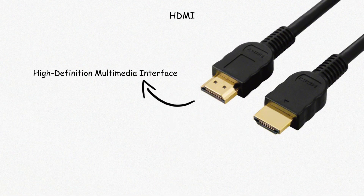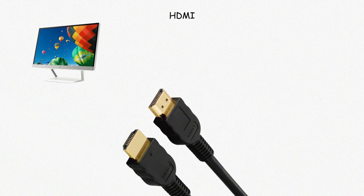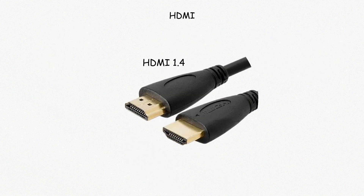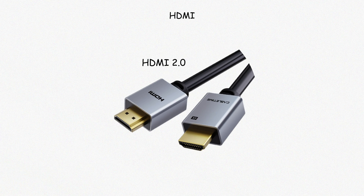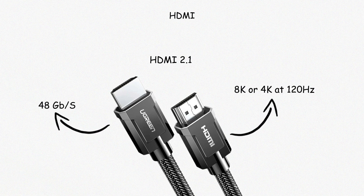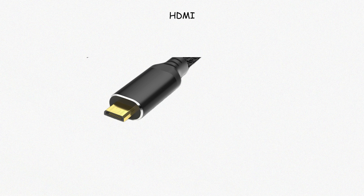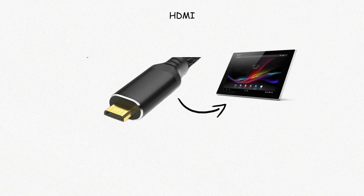HDMI stands for High Definition Multimedia Interface. It sends digital video and audio through one cable and is used to connect monitors, TVs, and projectors. HDMI 1.4 supports 4K at 30 hertz, HDMI 2.0 raises that to 4K at 60 hertz, and HDMI 2.1 increases bandwidth to 48 gigabits per second, enabling 8K or 4K at 120 hertz. The connector is wide and trapezoid-shaped. Mini and micro HDMI are smaller versions used on tablets and compact devices.